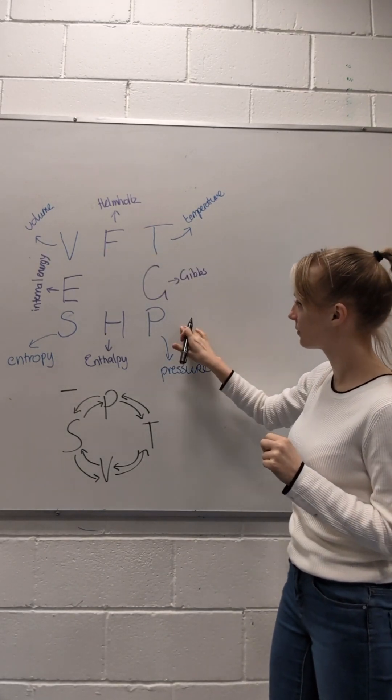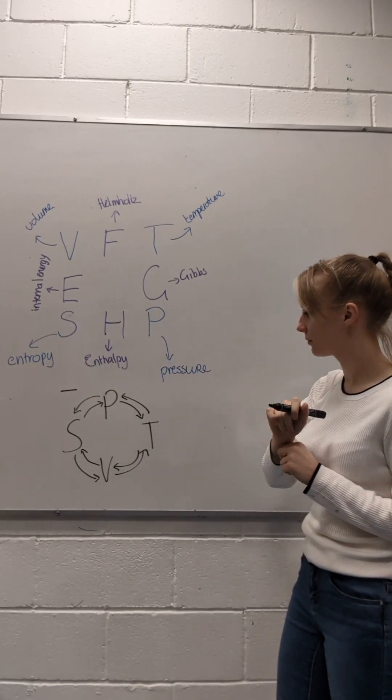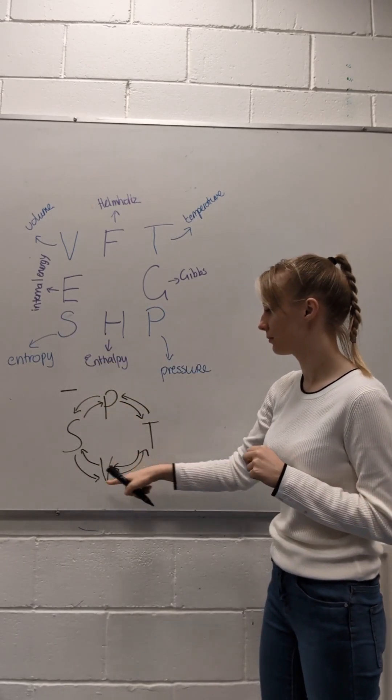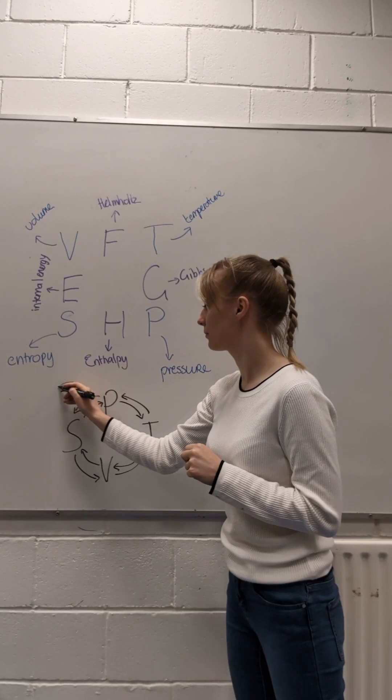We also have the natural variables: volume, temperature, pressure, and entropy. We can go clockwise and anticlockwise between these variables, with a minus sign between entropy and pressure.